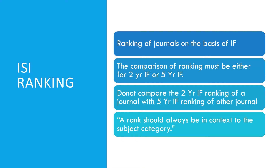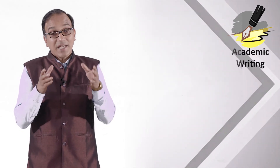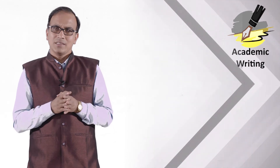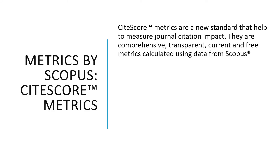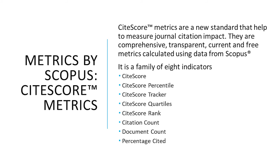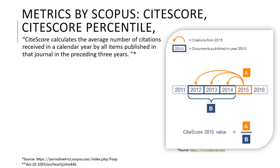Now let us discuss the metrics by Scopus, called CiteScore metrics. It is exclusively provided by Scopus and based on the Scopus database. These are new standards that help measure journal citation impact. They are comprehensive, transparent, current, and free metrics calculated using data from Scopus. It is a family of eight indicators: CiteScore, CiteScore Percentile, CiteScore Tracker, CiteScore Quartile, CiteScore Rank, Citation Count, Document Count, and Percentage Cited.